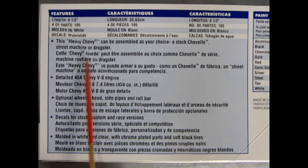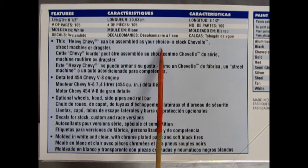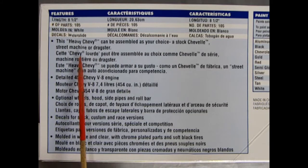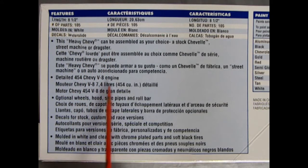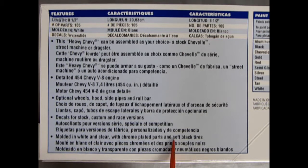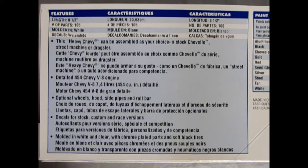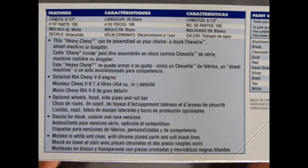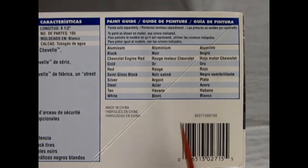This heavy Chevy can be assembled as your choice: a stock Chevelle, street machine or dragster. Detailed 454 Chevy V8 engine, optional wheels, hoods, side pipes and roll bar. Decals for stock, custom and race version. Molded in white and clear with chrome plated parts and soft black tires. They also give you the paint callout colors that you need in order to finish this model.